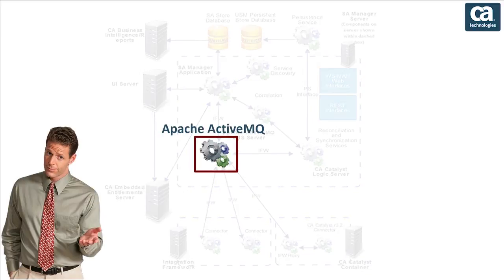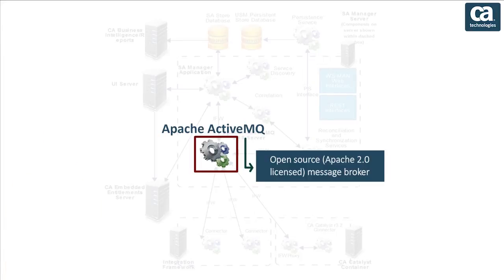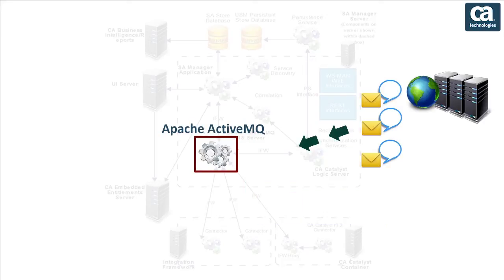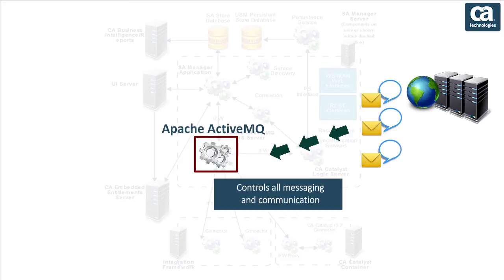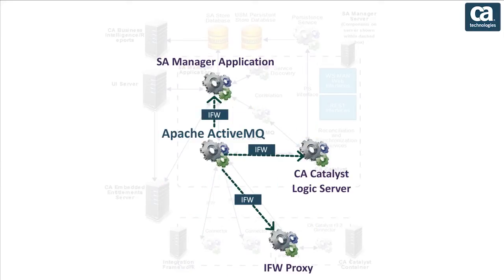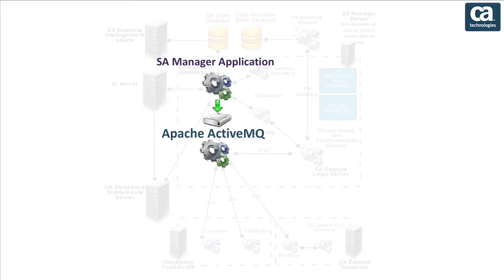Let us see the functionality of Apache ActiveMQ JMS Server. Apache ActiveMQ is an open-source message broker that fully implements the Java Message Service 1.1. The ActiveMQ server controls all messaging and communication from external sources. The server also receives alerts and CI information from connectors through the Integration Framework, IFW, and sends this information to various components for storage and analysis. This component is always installed with the SA Manager.